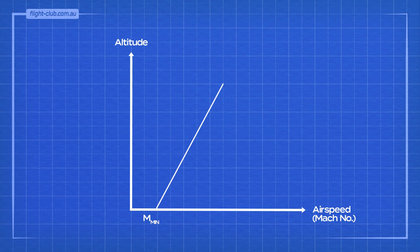The Mach number for the high-speed buffet decreases with increasing altitude. This speed is commonly abbreviated to MMAX and is shown by the backward sloping line on the graph like this.